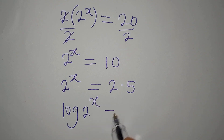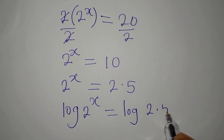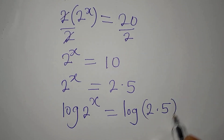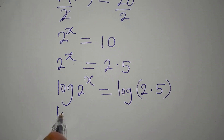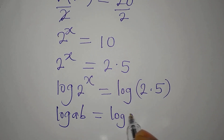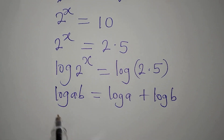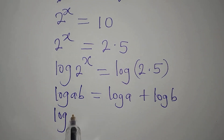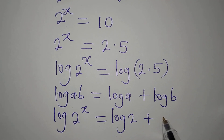So log of 2 to the power of x equals log of 2 multiplied by 5. Do you know that log(ab) is simply the same as log(a) plus log(b)? So we express this as: log of 2 to the power of x equals log of 2 plus log of 5.